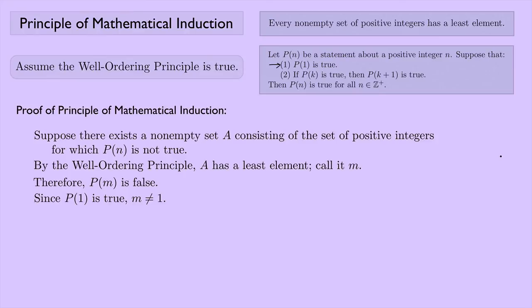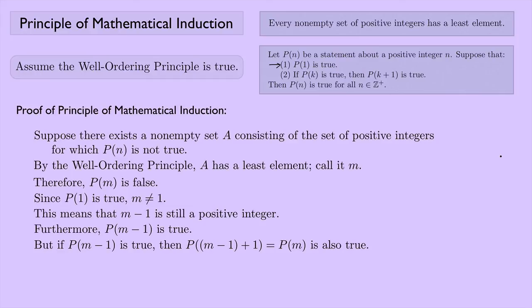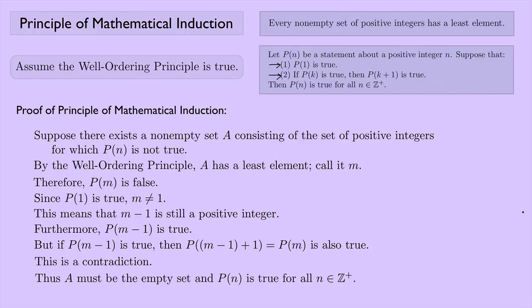This means M−1 is still a positive integer — since M isn't 1, subtracting 1 doesn't take us to 0. Furthermore, P(M−1) is true, because M was the least element for which P(n) is not true, so everything before it must be true. But if P(M−1) is true, then P(M−1+1), which equals P(M), is also true — using the inductive step. This is a contradiction, because we already said P(M) should be false. Thus A must be the empty set, and P(n) is true for all positive integers n.